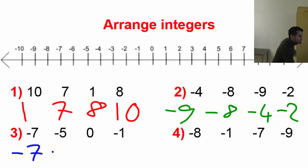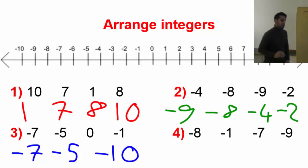Negative 7, then negative 5 comes, and then—that's a very ugly 5—and then negative 1, and then 0.